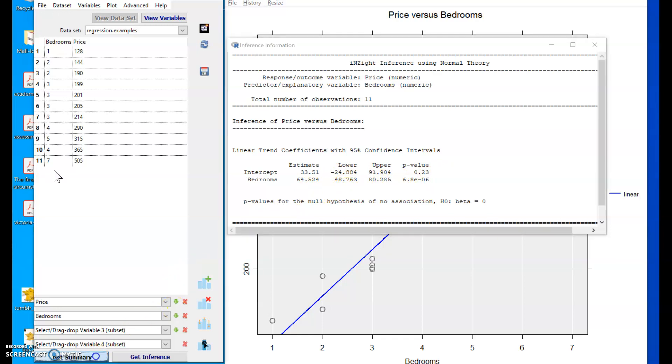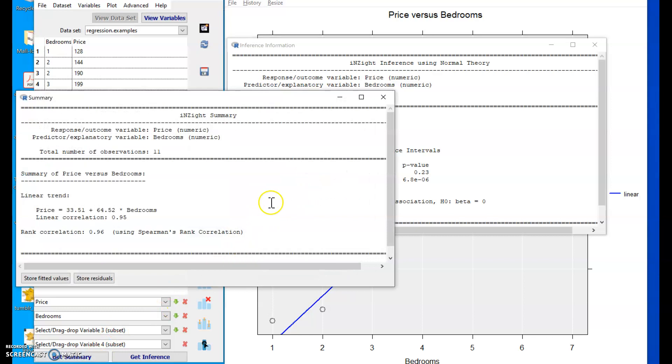Coming back to the get summary button, once we've added the line to the plot, it actually tells us a little bit more, giving us the equation for that line and Pearson's correlation coefficient, in addition Spearman's rank order correlation coefficient.